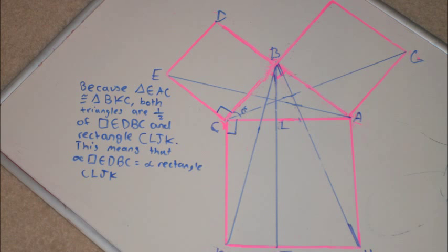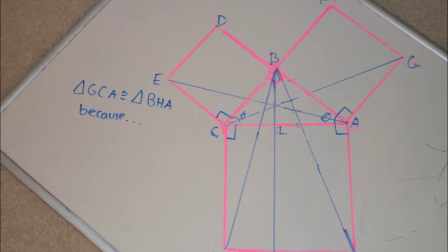And now we know that the area of square EDBC is equal to the area of rectangle CLJK. This is because the areas of triangles EAC and BKC are both one half of square EDBC and rectangle CLJK respectively. And the triangles are also congruent. This means half of square EDBC equals half of rectangle CLJK, or the area of the whole square equals the area of the whole rectangle.